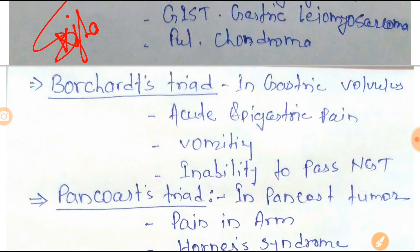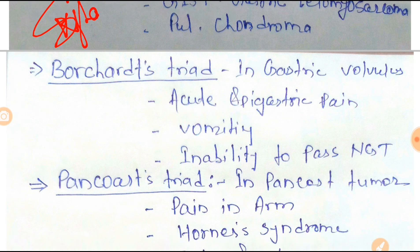Next is Borchardt's Triad, found in gastric volvulus. The triad is acute epigastric pain, vomiting, and inability to pass a nasogastric tube. Always remember these three things for Borchardt's Triad.